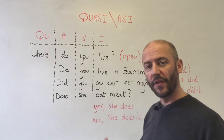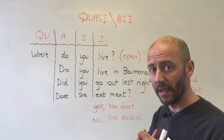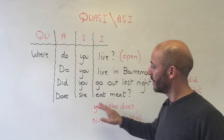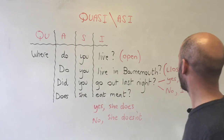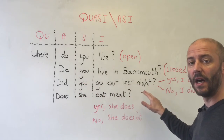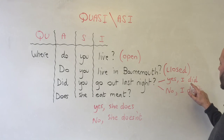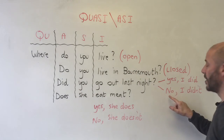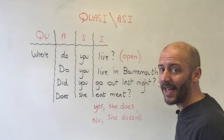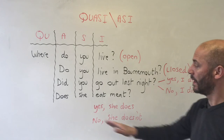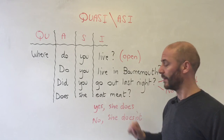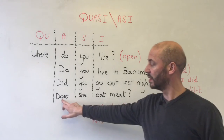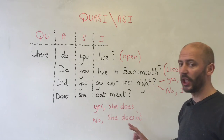With closed questions — ASI — in the answer we repeat the auxiliary verb. Did you go out last night? Yes, I did — in the positive. No, I didn't — in the negative. Does she eat meat? Yes, she does. No, she doesn't.